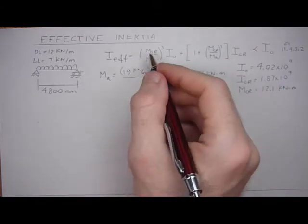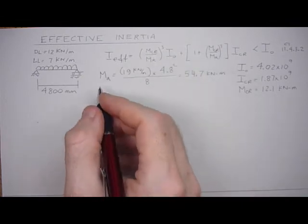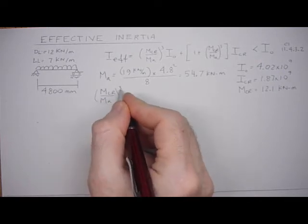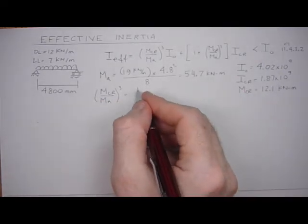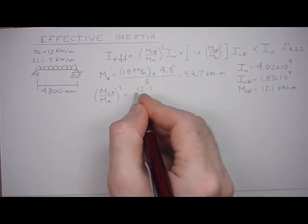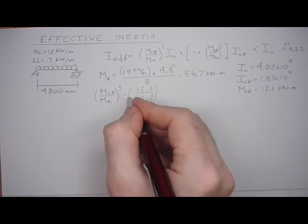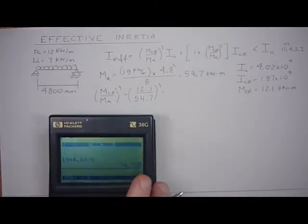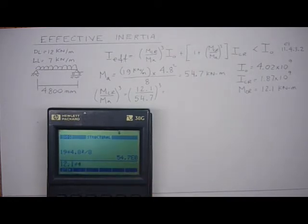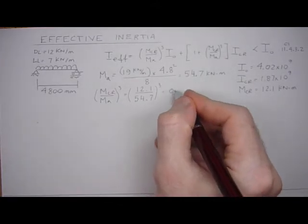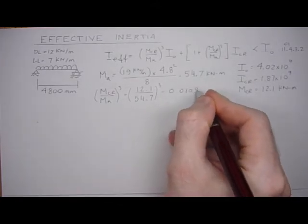And then we can calculate the cracked over applied moment cubed as the parameter. So the cracking moment 12.1 over 54.7 cubed. 12.1 over 54.7 cubed equals 0.0108. Great.